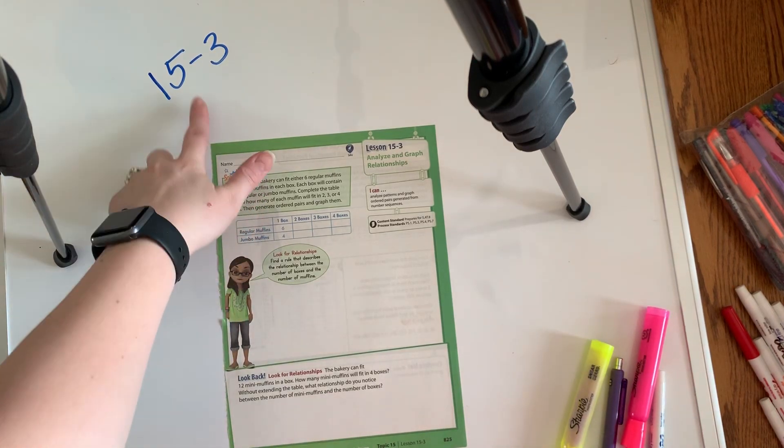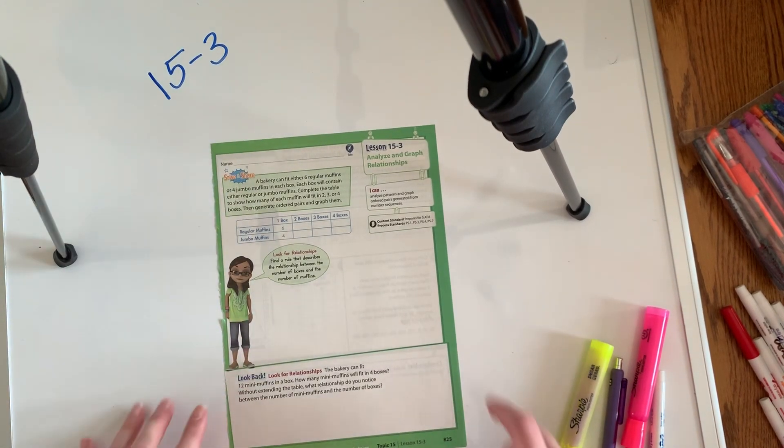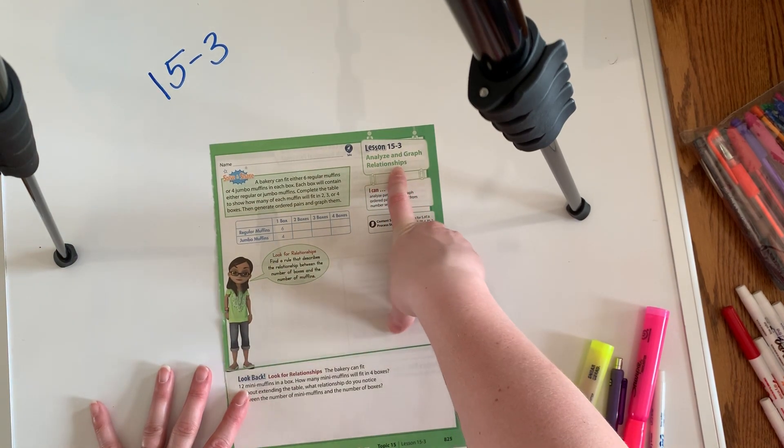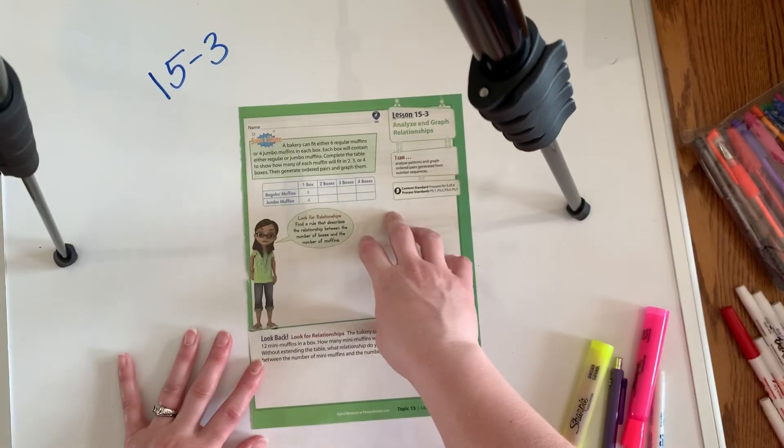Hi there boys and girls. So we are on lesson 15-3. This is called Analyze and Graph Relationships. And this is actually where this whole thing gets kind of cool.